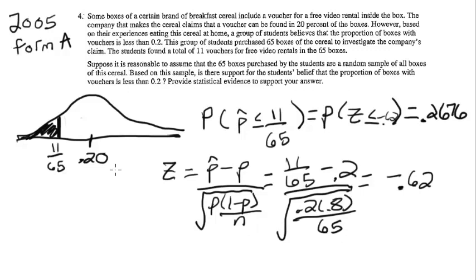So basically, what's going on here is that under the assumption that the company is correct, that 20% of their cereal boxes do contain vouchers, we would expect in random samples of size 65 to get 11 vouchers or less about 26.76% of the time. Now that's not that unlikely. So basically what this is saying is, was our result really that unusual, assuming that the company is telling the truth? Not really.